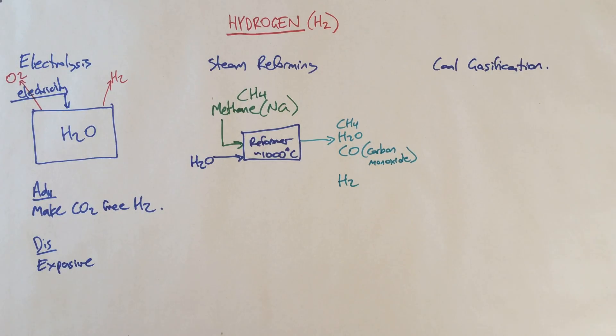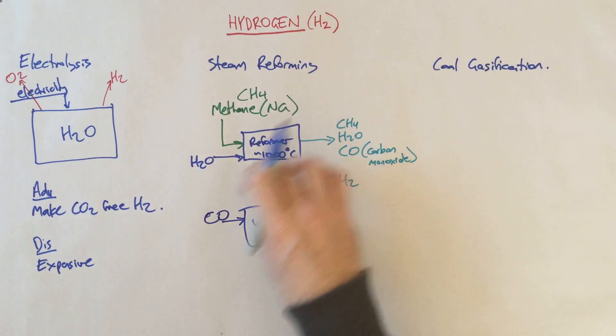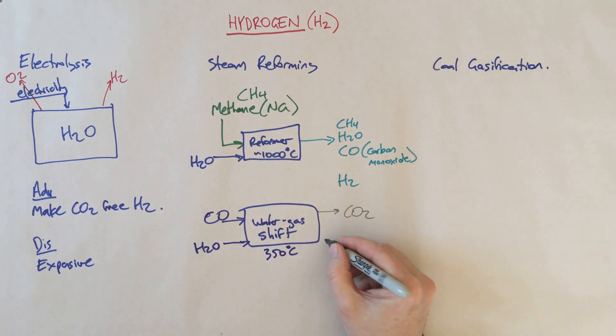We can then put that mixture of gases into a second type of reactor called a water gas shift reactor. This allows us to convert carbon monoxide into carbon dioxide and more hydrogen. Sometimes people will separate carbon monoxide, sometimes they'll just put the whole lot in. It's more common to put all of this in. We've got water again or steam. This one operates at a lower temperature, maybe 350 degrees Celsius. That makes carbon dioxide, CO2, and more hydrogen.